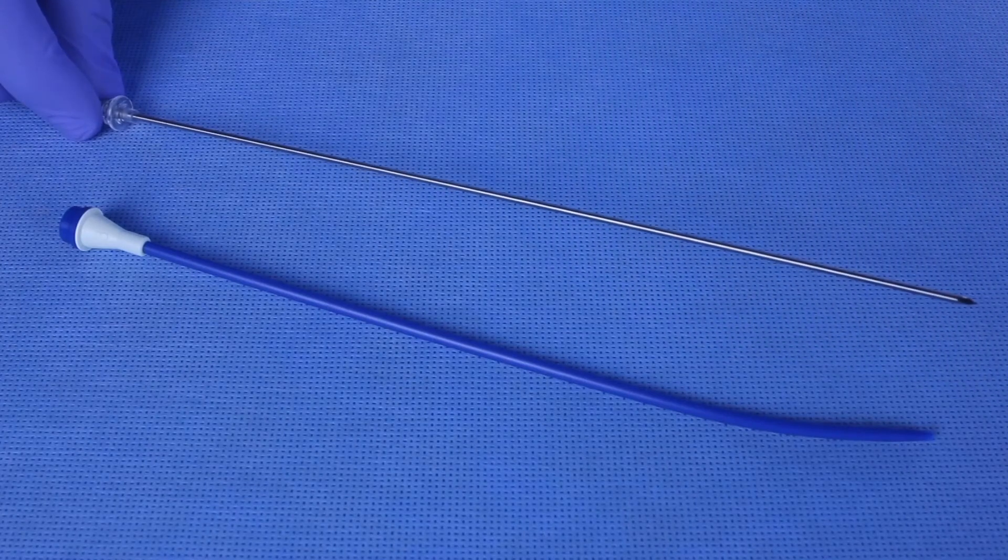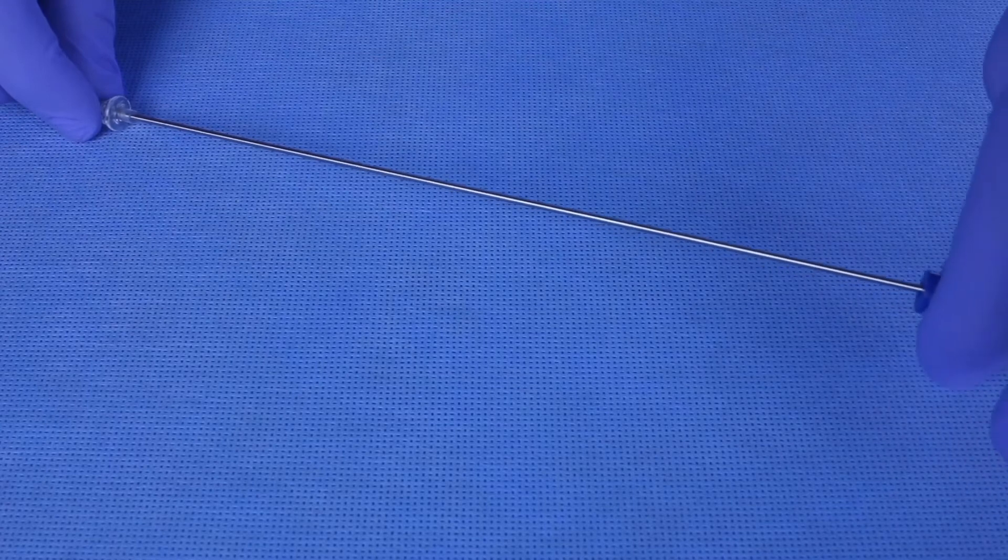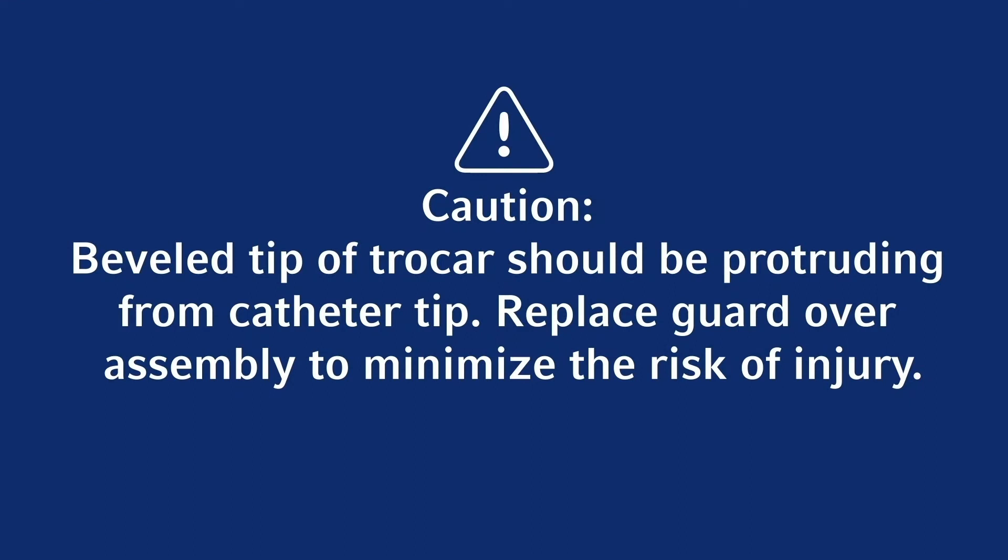Remove guard from stainless steel trocar. Gently insert trocar into guide catheter until hub is seated firmly against the guide catheter hub. Caution: beveled tip of trocar should be protruding from catheter tip. Replace guard over assembly to minimize the risk of injury.